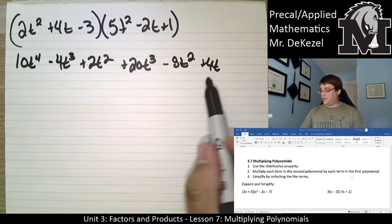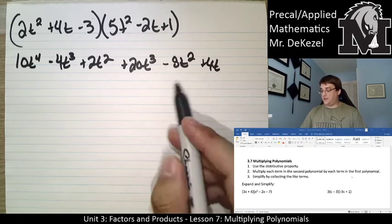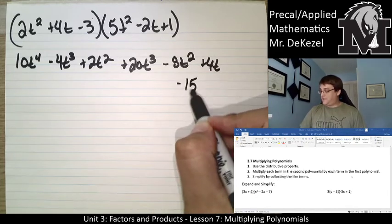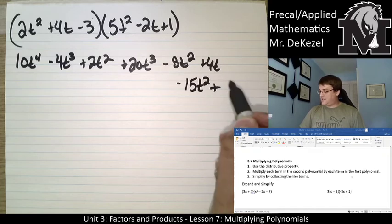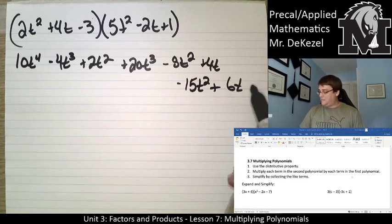Let's do the last one now. I'm going to go underneath it because I seem to have run out of room. Minus 15t squared plus 6t minus 3.